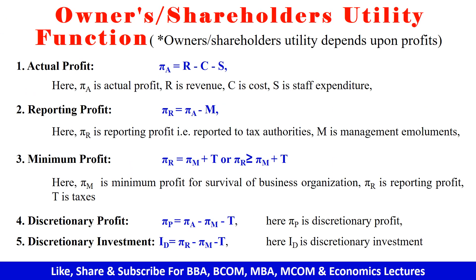Next comes the owner's or the shareholder's utility function, which depends upon profits. The profits can be the actual profit, which is denoted by PiA. If we subtract cost and staff expenditure from revenue, we get the actual profit.